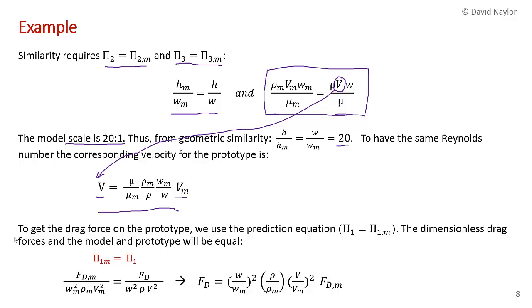To get the drag force on the prototype, we use the prediction equation — the pi 1 parameter that contains the drag force. We set the dimensionless drag force on the model equal to the dimensionless drag force on the prototype, and solve for the drag on the prototype, which gives the prototype drag force in terms of the drag measured on the model.